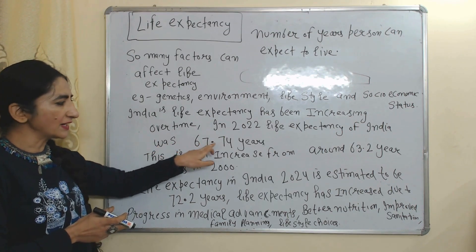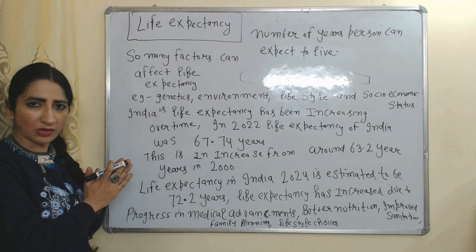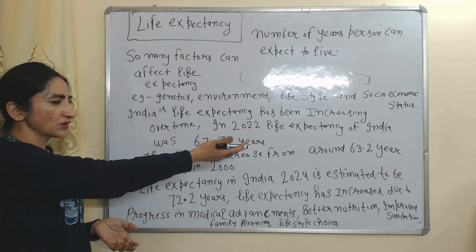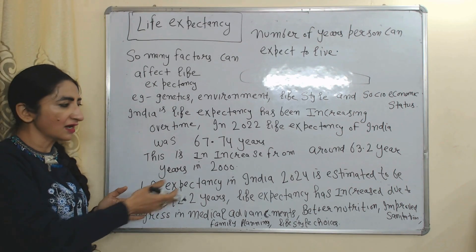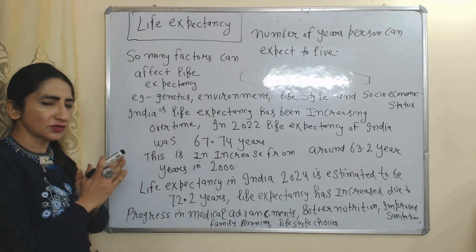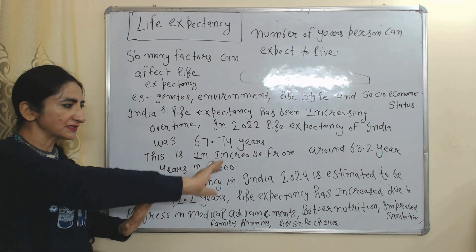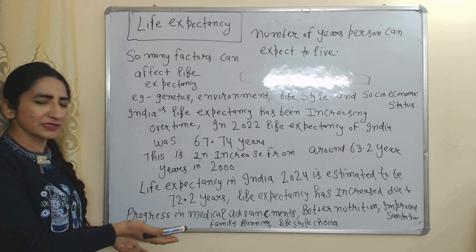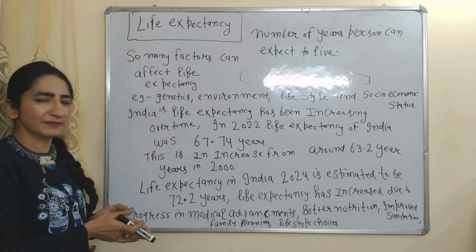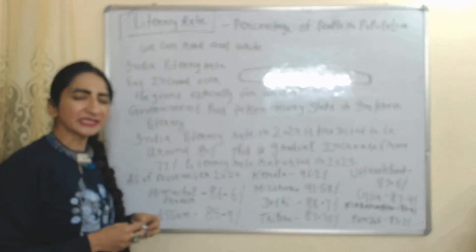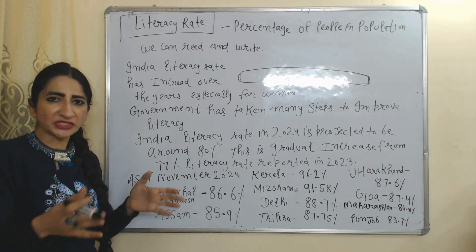In 2022, life expectancy of India was 67.74 years, increased from 63.2 years in 2000. Life expectancy in India in 2024 is estimated to be 72.2 years. It continues to increase due to progress in medical advancement, better nutrition, improved sanitation, family planning, and lifestyle choices.